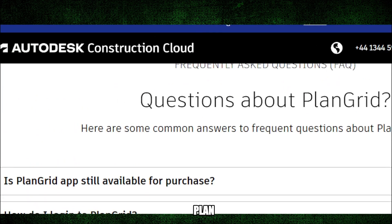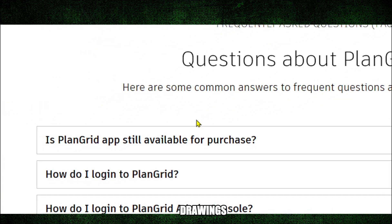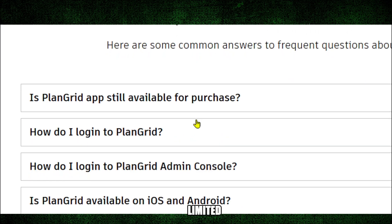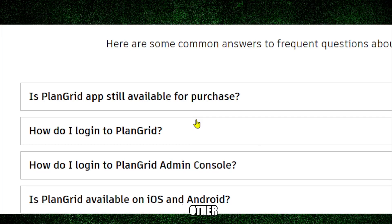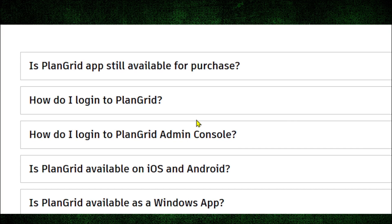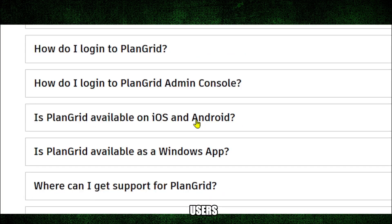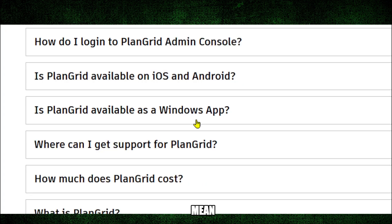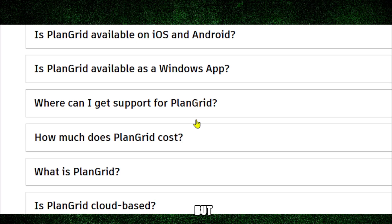The cons of PlanGrid: the pricing structure is based on the number of print sheets you can access, which can be expensive for larger projects with many drawings. Also, PlanGrid really focuses on document management and collaboration — it doesn't handle other aspects of construction management like budgeting or scheduling. There is also a learning curve for new users to get comfortable with the software's features.